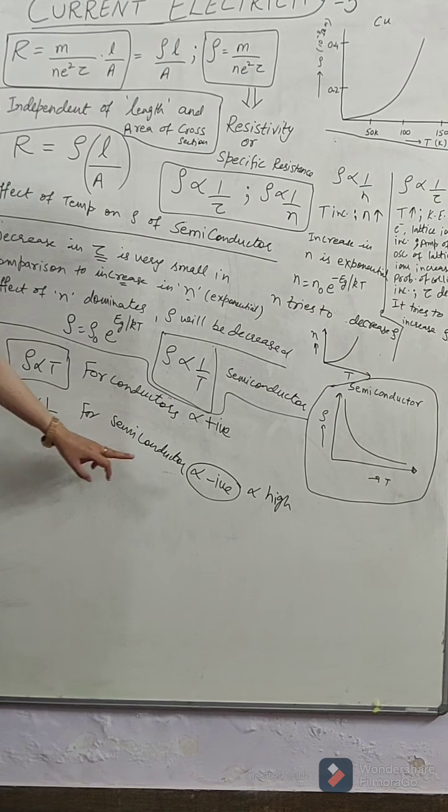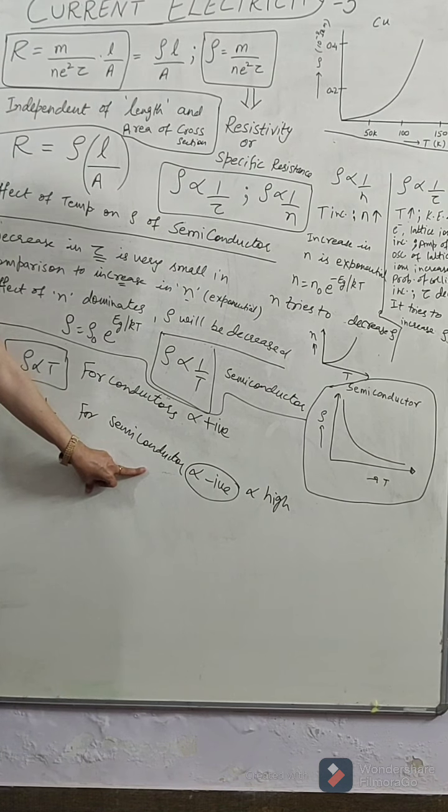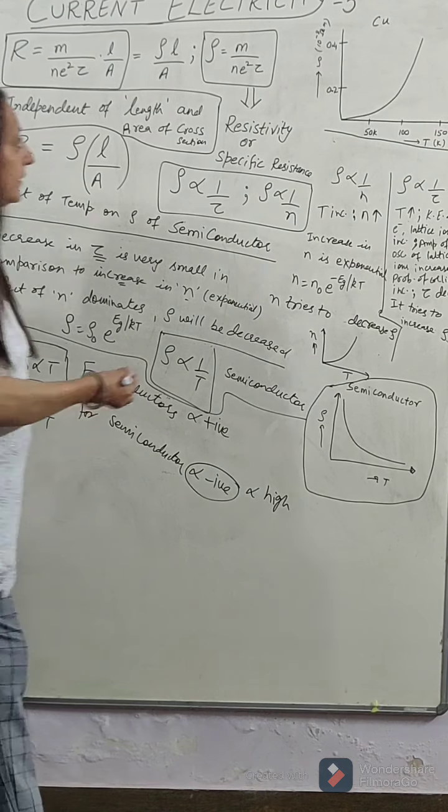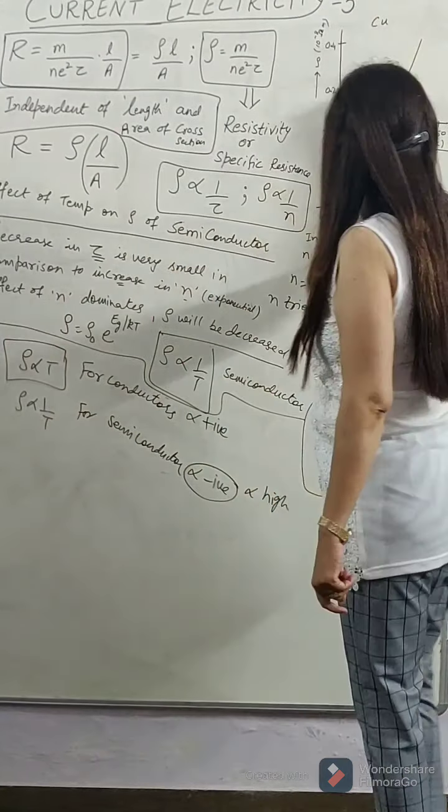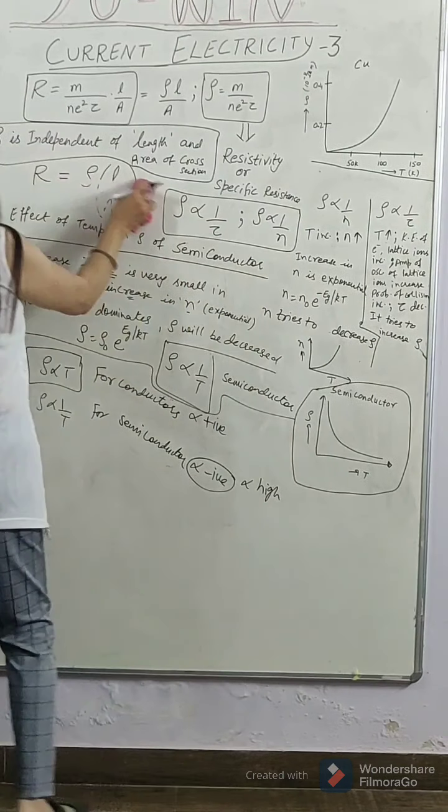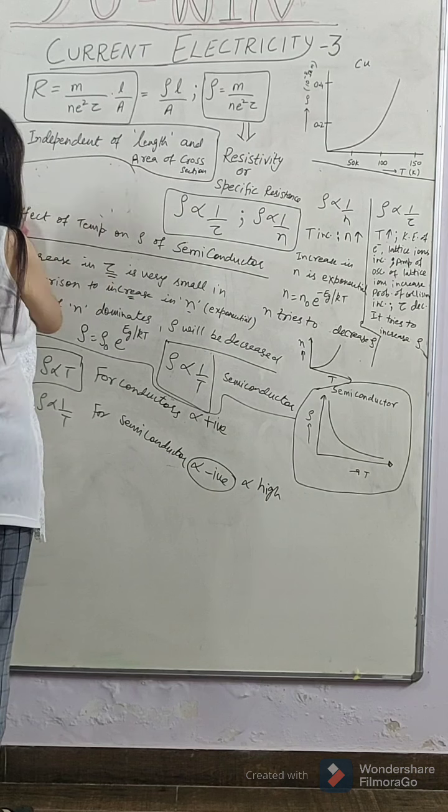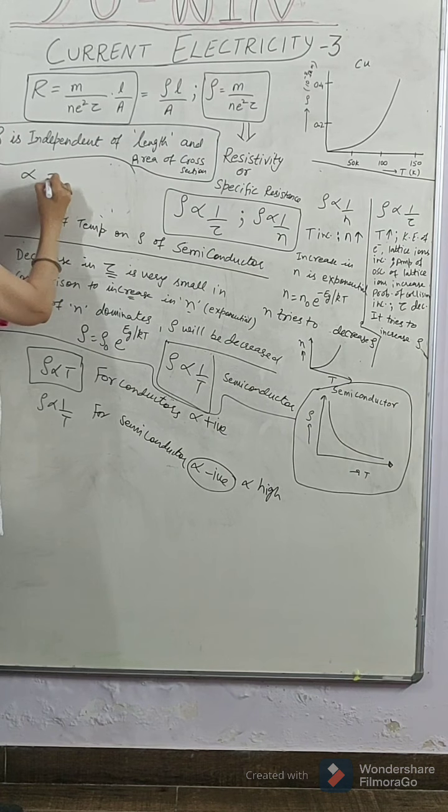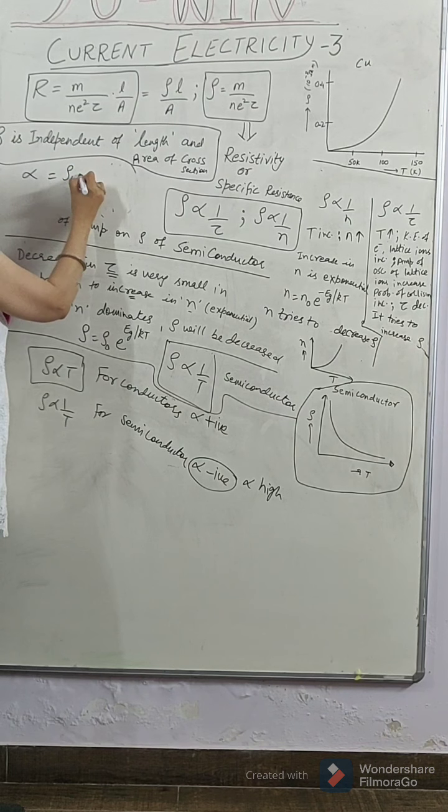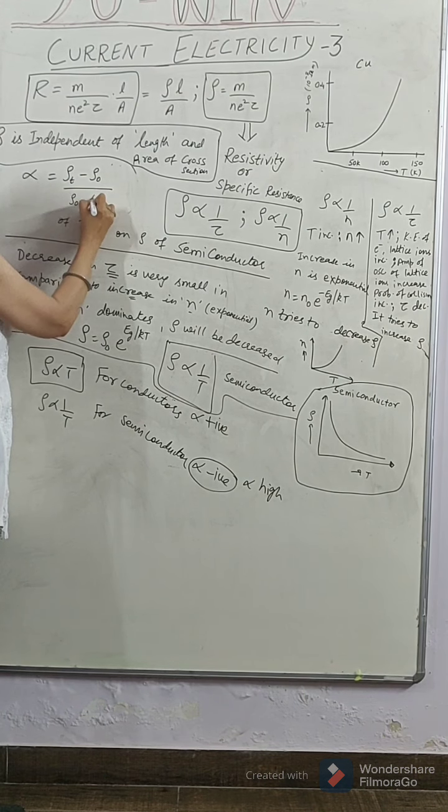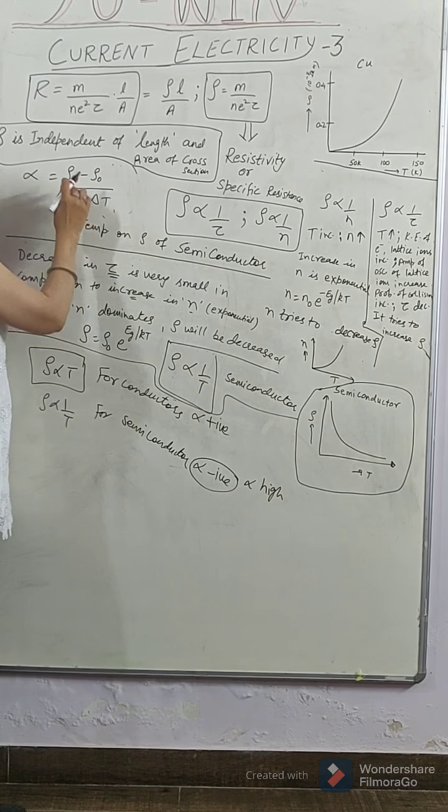Alpha is what? Change in resistivity per net original resistivity per degree rise in temperature. We have studied in this video only. We have read that alpha is rho T minus rho naught. If you look at that expression again. So, you will see that what was alpha? Alpha is rho T, that is final resistivity minus rho naught original resistivity divided by original resistivity into change in temperature.